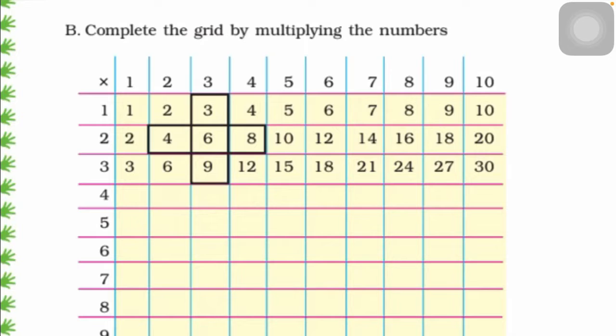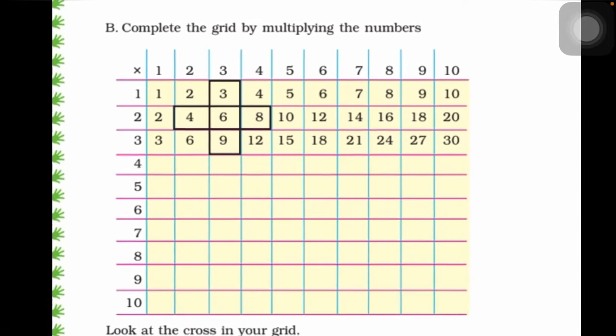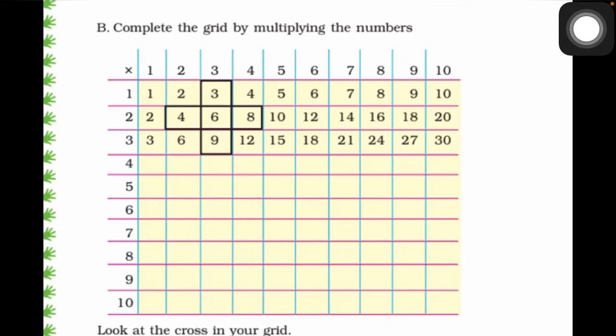Here one box is given, so we have to fill this all the grid by multiplying the numbers. What is the meaning of multiplying numbers? We have to multiply the numbers which are given here. So starting with the first one, here you can see...